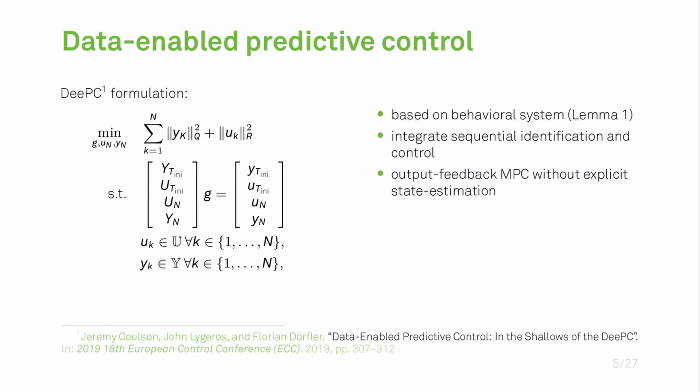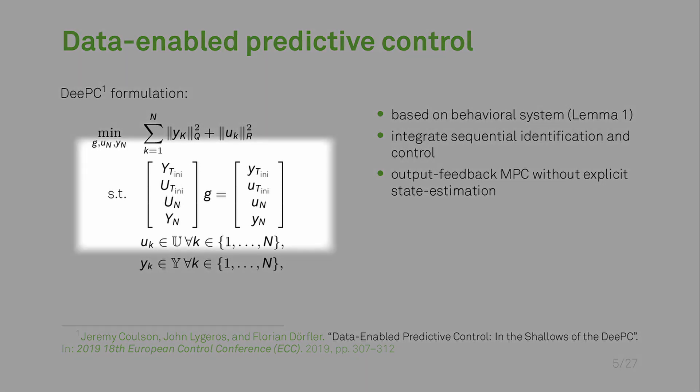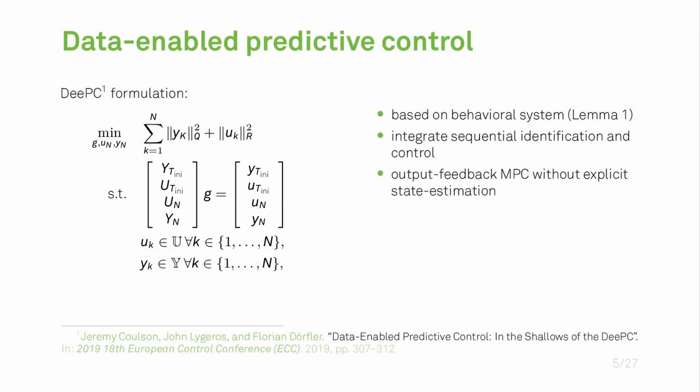This lemma gave rise to the data-enabled predictive control method which is shown on this slide on the left hand side. The method was introduced in 2019 and is based on the lemma. We can recognize the formulation of the lemma here as the constraint of the model predictive control problem. The appeal of this formulation is that we are integrating the typically sequential identification and control step and that we are obtaining an output feedback MPC approach without explicit state estimation.